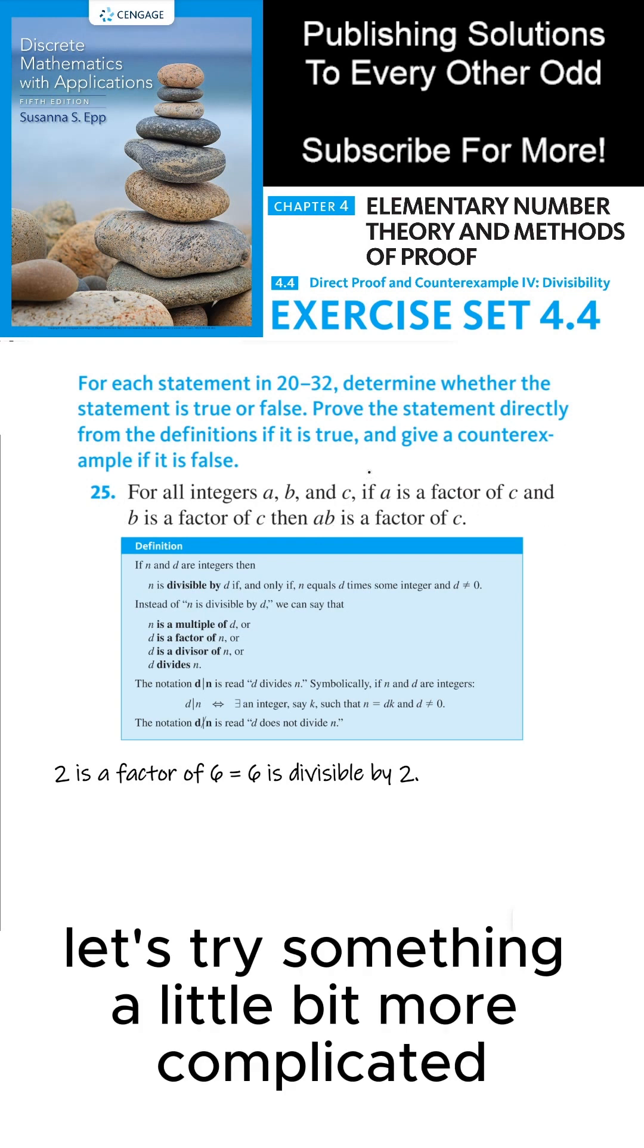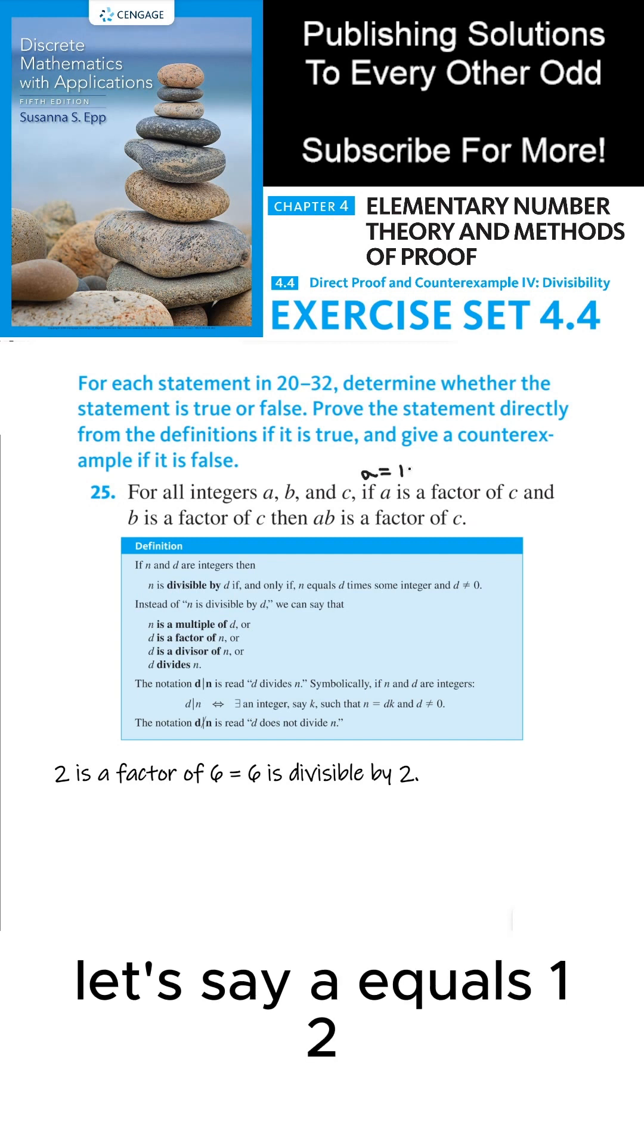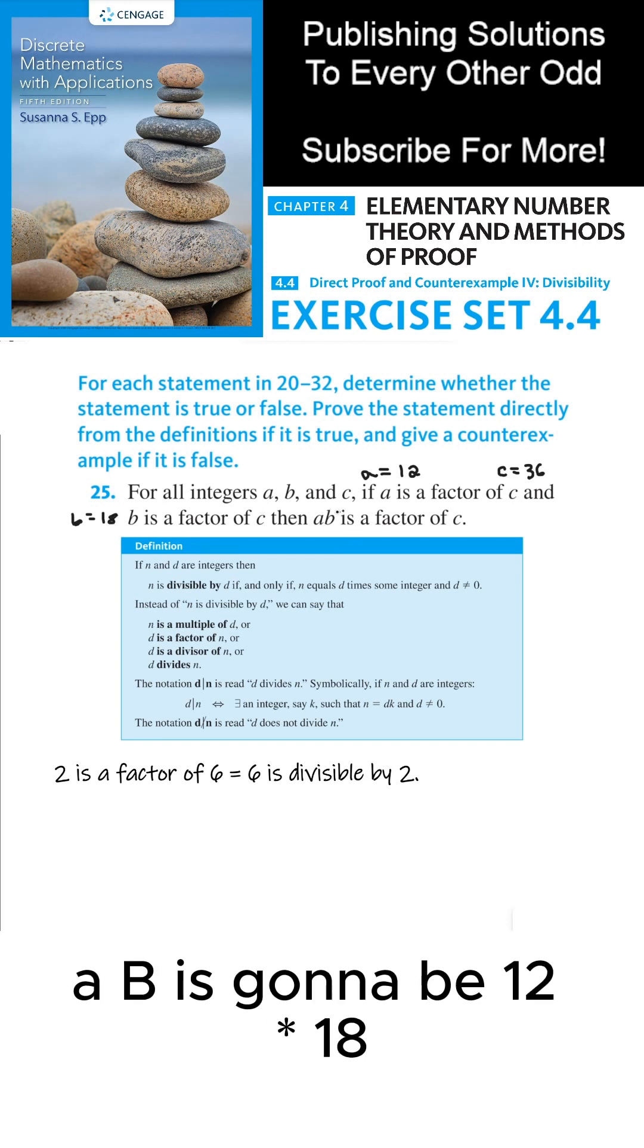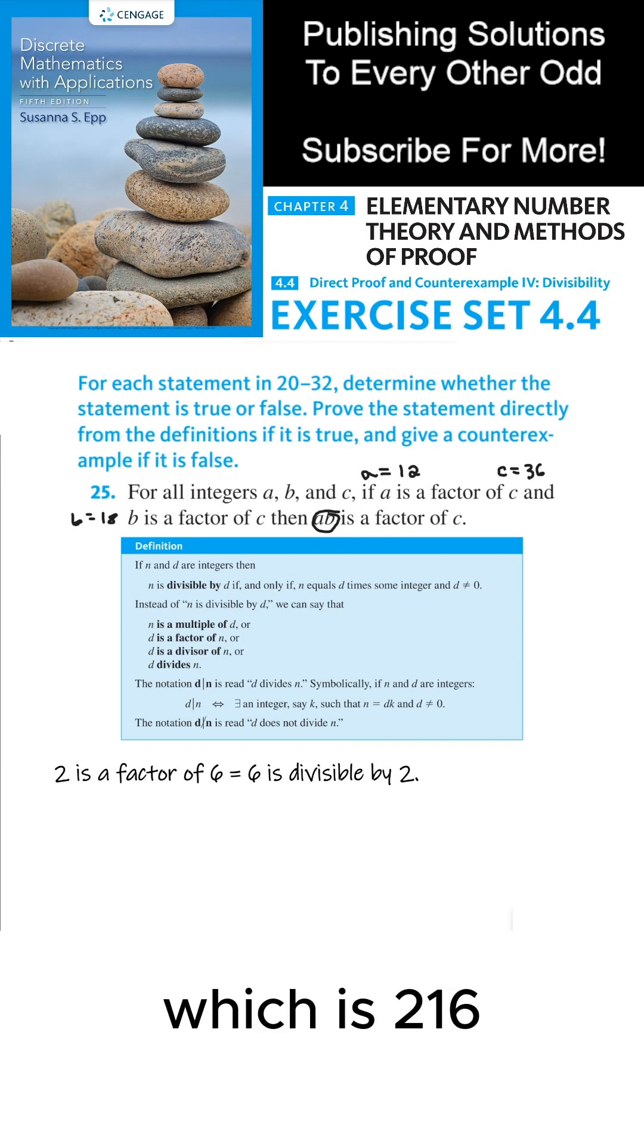Let's try something a little bit more complicated. Let's say a equals 12 and c equals 36. b we're going to pick as 18. This time ab is going to be 12 times 18, which is 216.